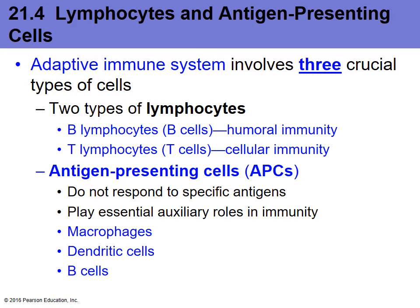In addition to T cells and B cells, there is a third type of cell important to our adaptive immune system called antigen-presenting cells, or APCs. Antigen-presenting cells recognize a foreign antigen, partially attack and digest it, and then take a little piece of that antigen and present it to the B cells and T cells, allowing them to recognize the foreign entity and go to the site of injury. APCs make the rate of recognition faster because they can scavenge more area than T cells and B cells by themselves.